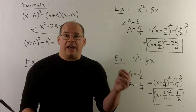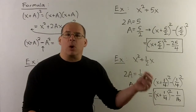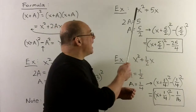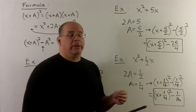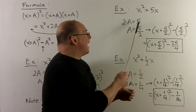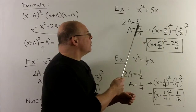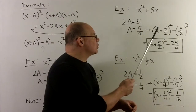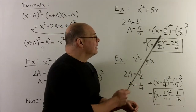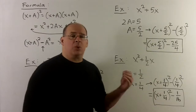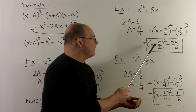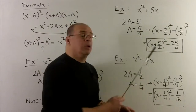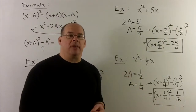Because we're dividing by 2 to get a, that brings fractions into our work. Let's try x squared plus 5x. The coefficient before x is 5, so 2a equals 5; dividing by 2 gives a equal to 5 halves. Putting it in the formula: x plus 5 halves, quantity squared, minus 5 halves squared. The 5 halves squared equals 25 over 4, giving x plus 5 halves, quantity squared, minus 25 over 4.